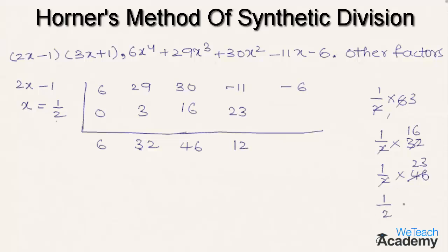Again multiplying 1/2 with 12: 2×1=2 and 2×6=12, giving 6. Writing this below the constant term -6, we get -6 + 6 = 0. So the remainder is 0, confirming that 2x-1 is indeed a factor.